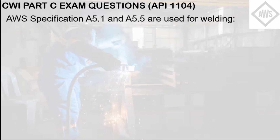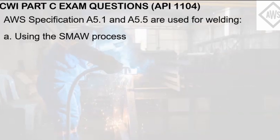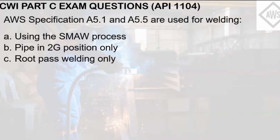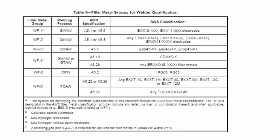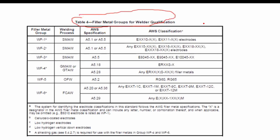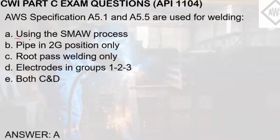AWS specification A5.1 and A5.5 are used for welding. Unless you memorize the AWS classification of filler metals, you will need the filler metal groups table for welder qualification. Chapter 4 of the standard refers to the specification of equipment and materials for welding. The AWS specification remains the same whether for weld qualification or welder performance qualification. From the choices, the answer is letter A — the specification pertains to SMAW, as shown in this row of the table. A5.1 or A5.5 refers to SMAW.